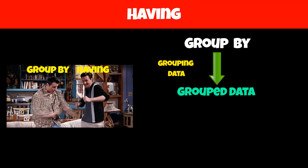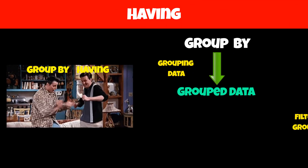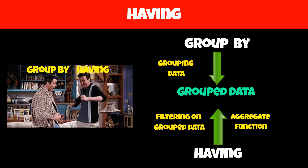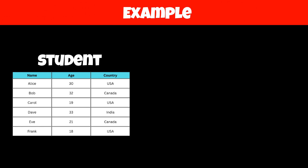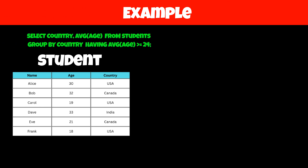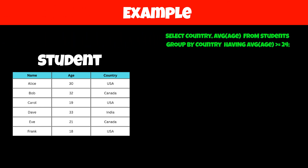On the other hand, the HAVING statement is used with the GROUP BY statement. GROUP BY groups the data, and HAVING helps you apply a filter on this grouped data using an aggregation function. For example, if you want to get countries where the average age of students is greater than 24 years, then you will use the HAVING statement with GROUP BY.